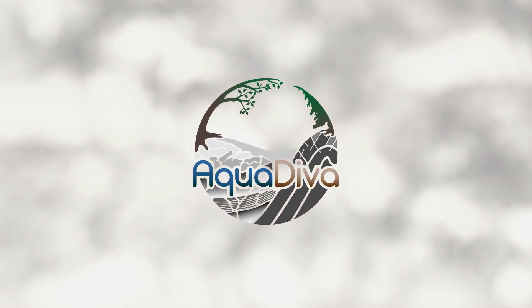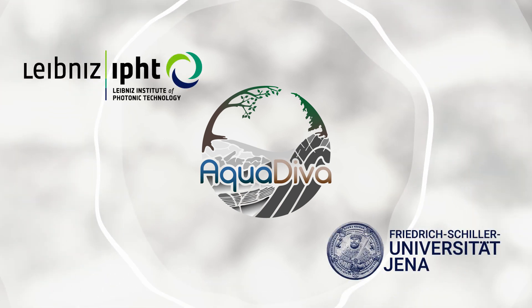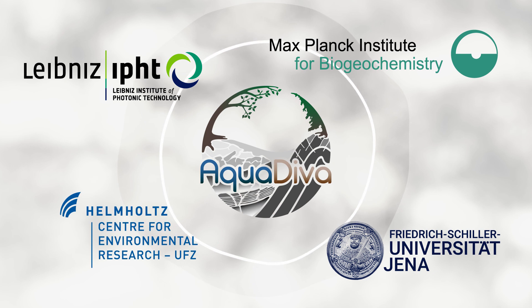Researchers at the collaborative research centre AquaDiva in Jena aim to gain a thorough understanding of processes in the critical zone. To achieve this, 80 researchers from four institutions and various disciplines are working closely together.